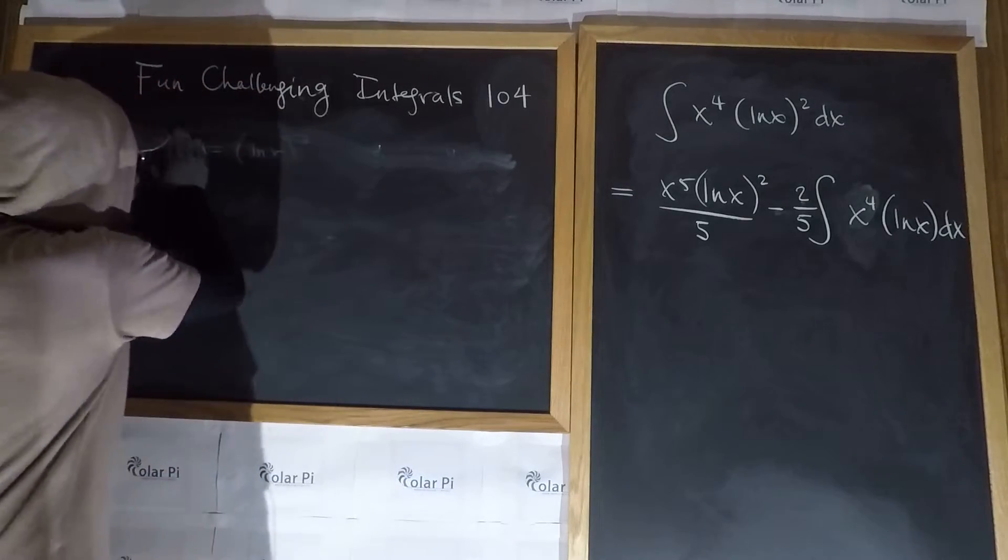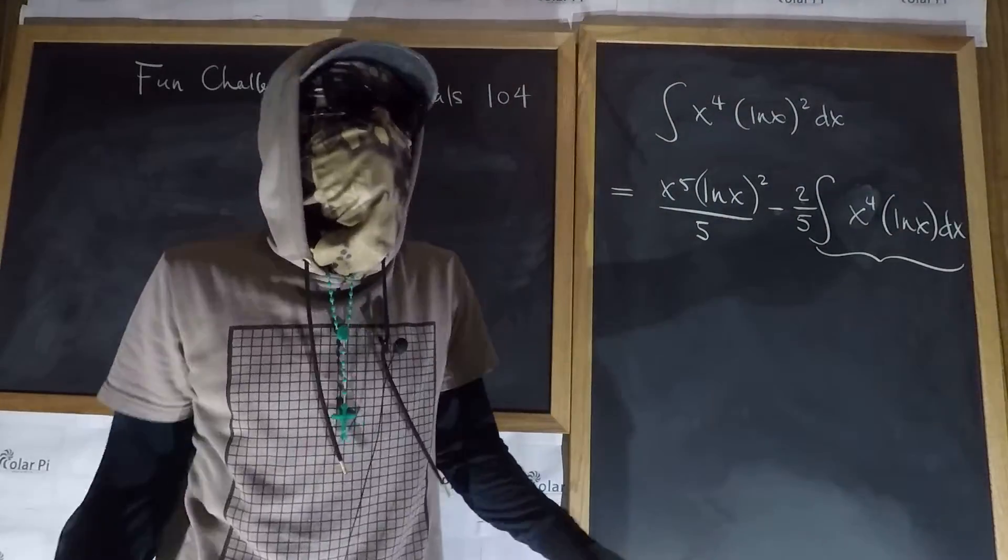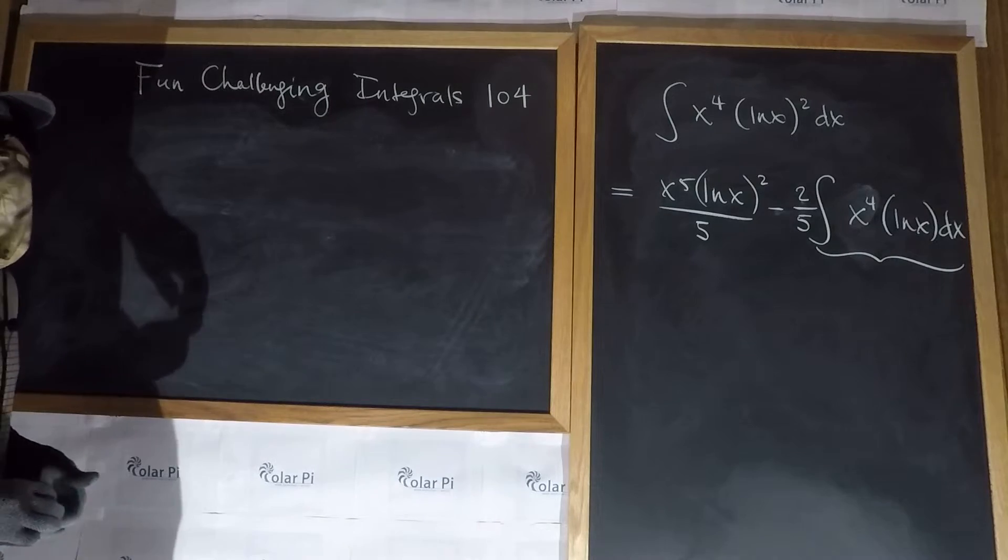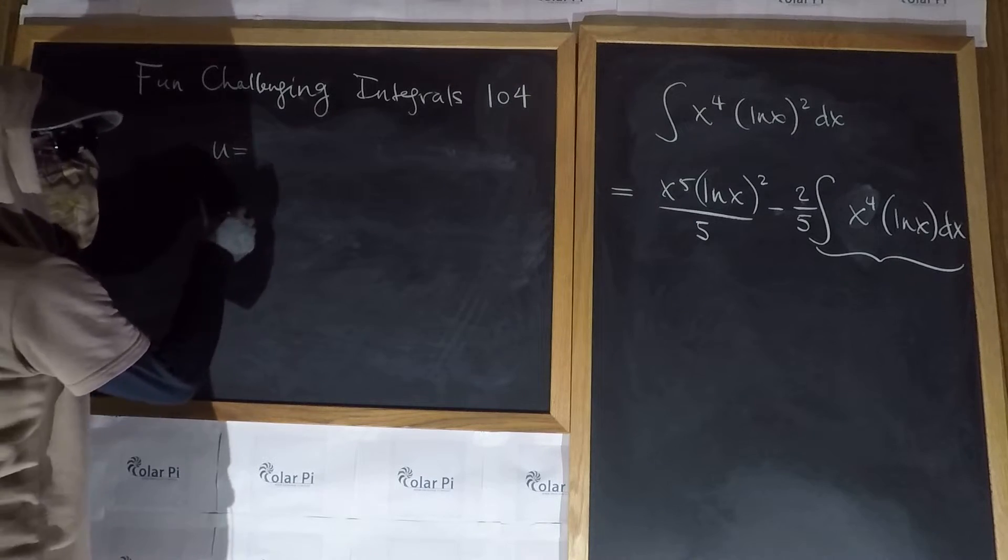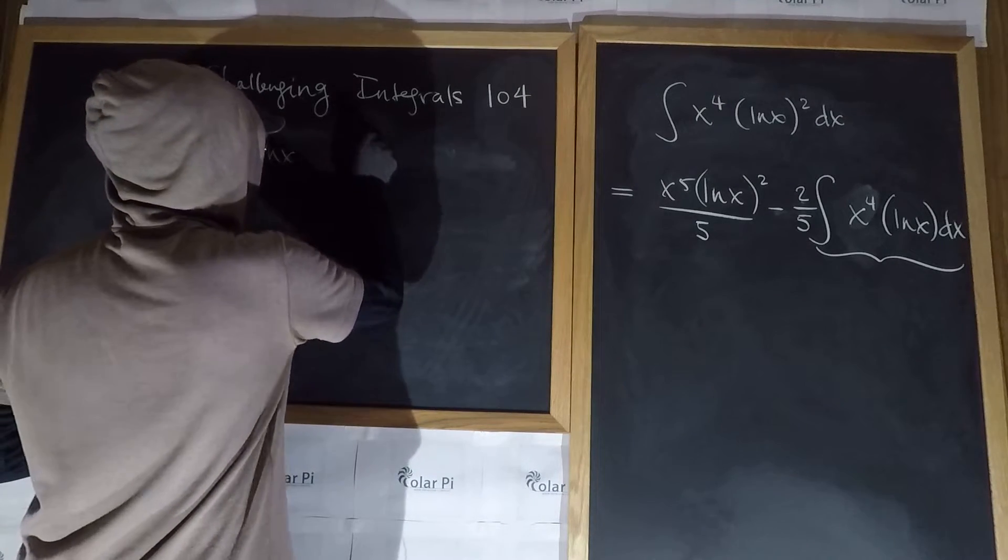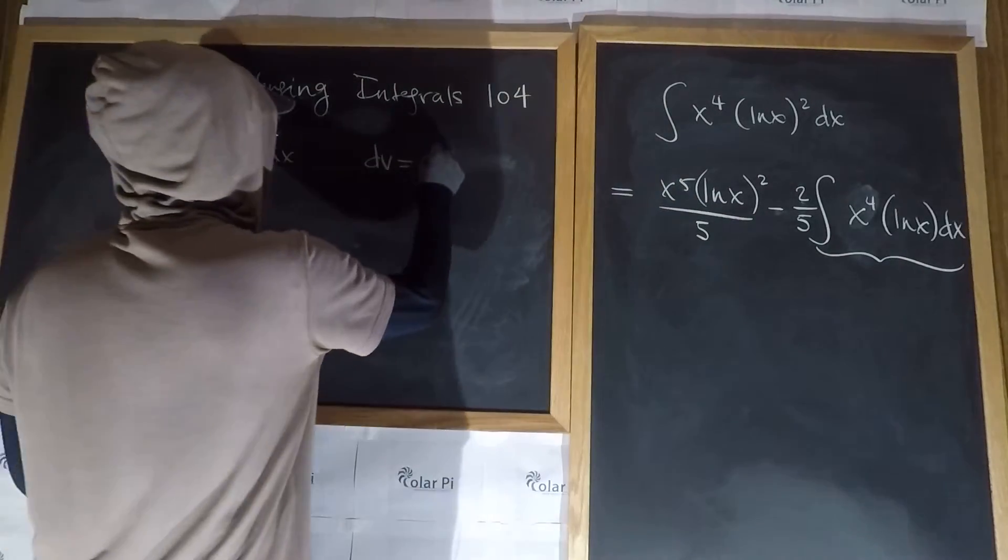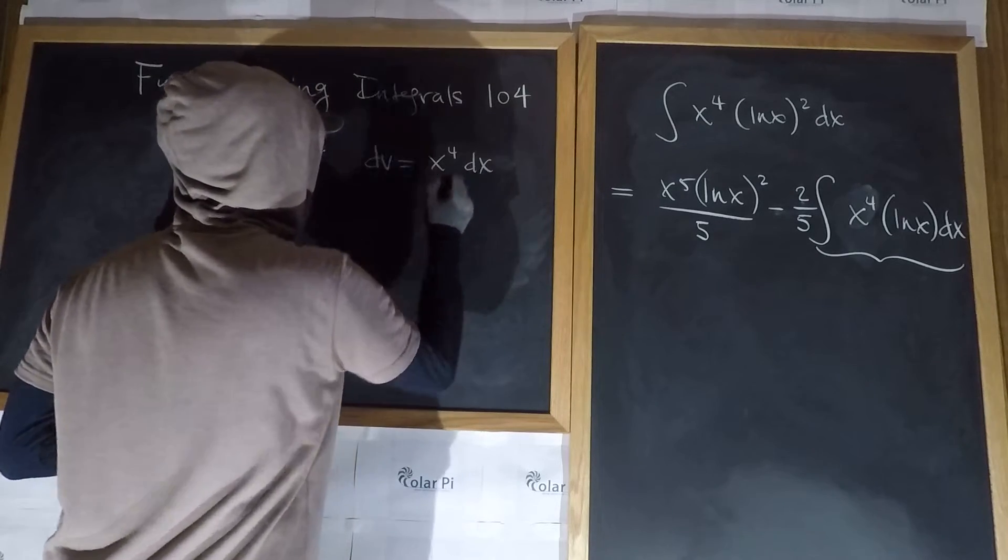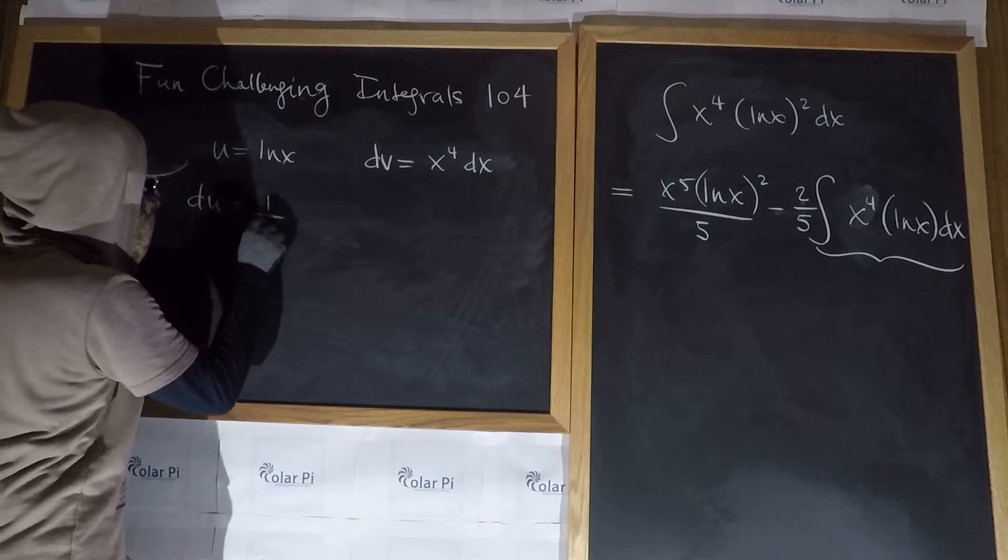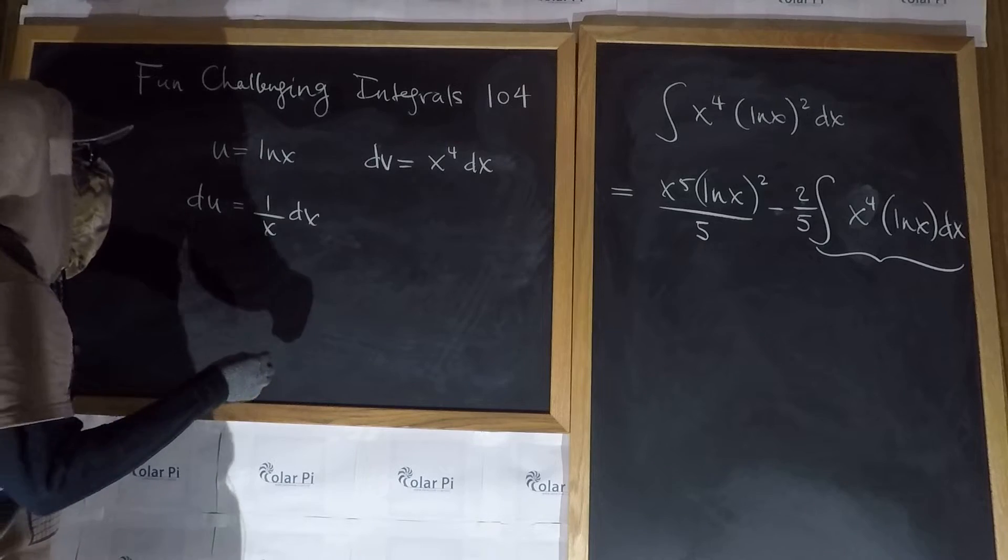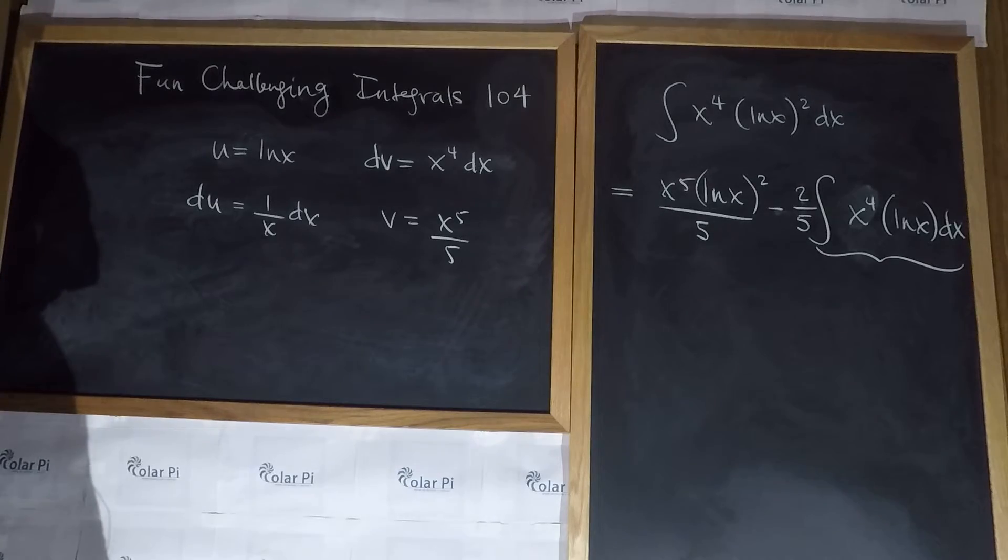Integration by parts all over again for this integral, of course, because that's what we have left to do to say we're done. So again, the whole pick a u, pick a dv. Let's pick u to be the natural log of x, and then dv, therefore, will have to be, and again we're looking at this integral there, so dv would have to be x to the fourth dx. So du is simply 1 over x dx, and then v is x to the fifth over 5.